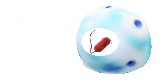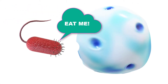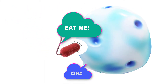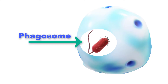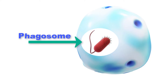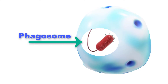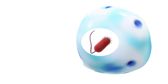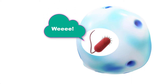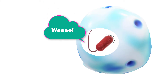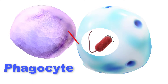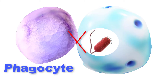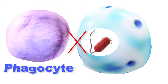The pathogen induces the host cell to take it up by phagocytosis and ends up in a phagosome. These intracellular pathogens, which live inside host cells as unwanted guests, gain temporary safe harbor within the phagosome. This is because the antibodies within phagocytic cells will not penetrate the host cell.